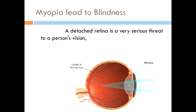Most low vision patients have degenerative myopia that led them to visual impairment. Symptoms of a detached retina include light flashes, floaters in your vision, and blurring of vision. Degenerative myopia in general is a serious and sight-threatening condition that should be brought to the attention of an eye care professional immediately.